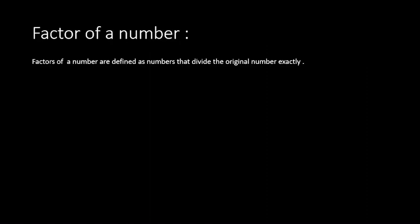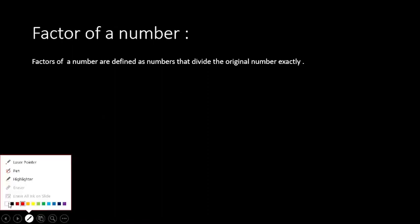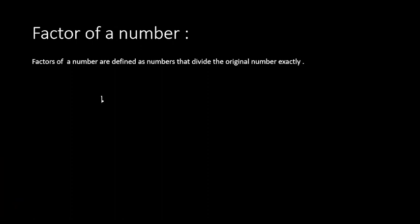What is a factor? Factors of a number are defined as the numbers that divide the number exactly, meaning the remainder will be 0. For example, if we look at 12, the factors of 12 are 1, 2, 3, 4, 6, and 12. Remember that number 1 and the number itself are always the factors of a given number.